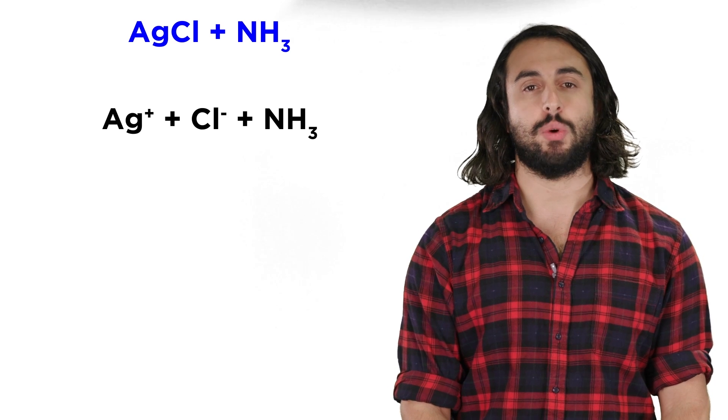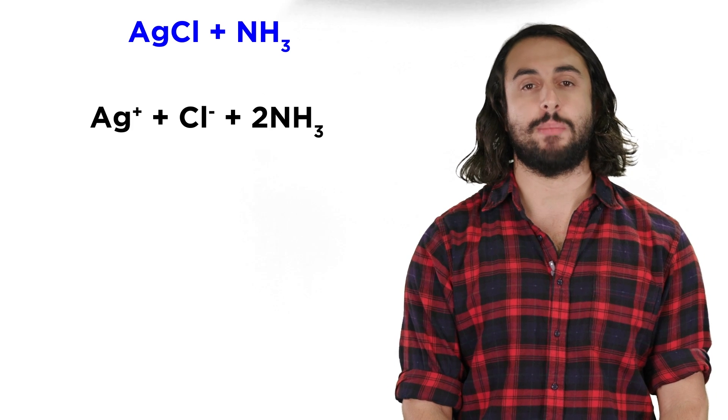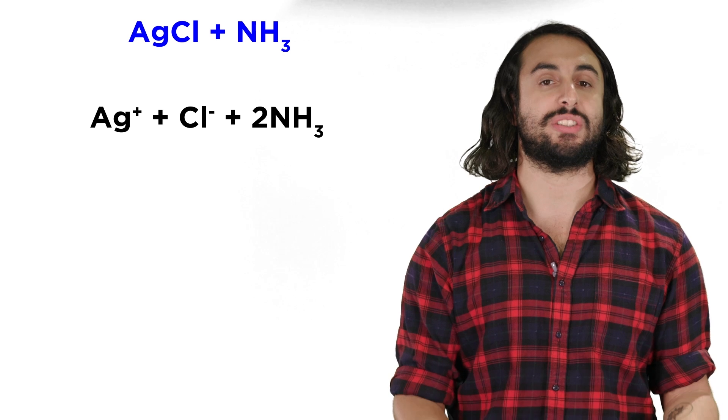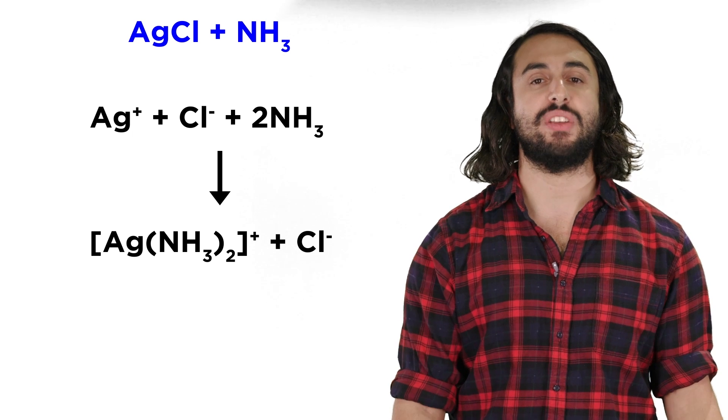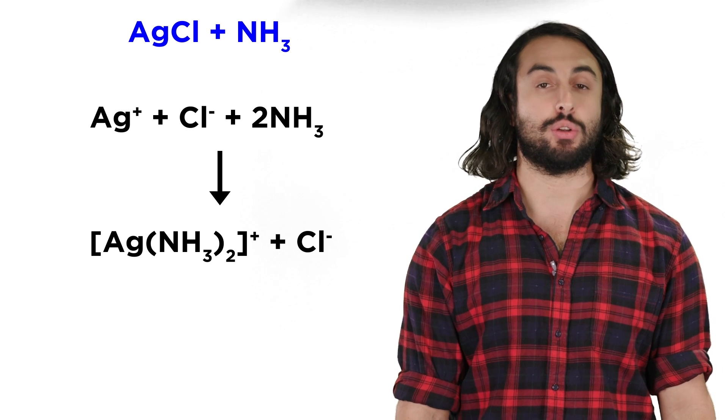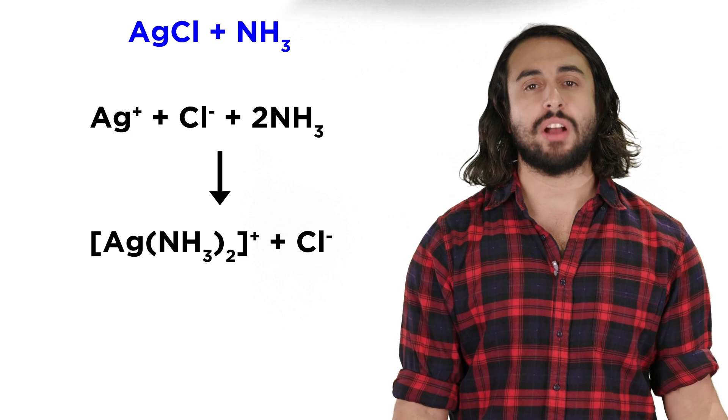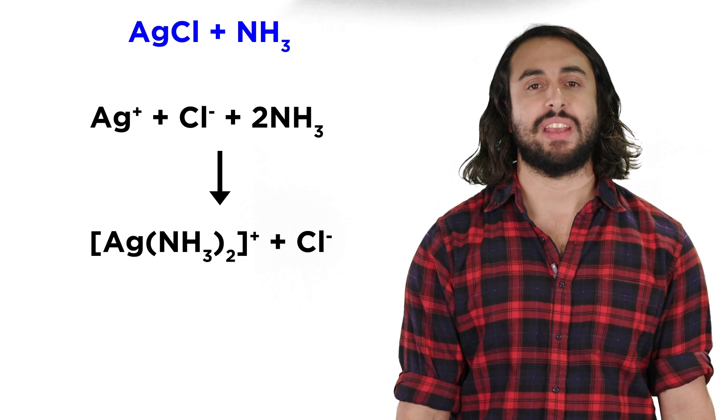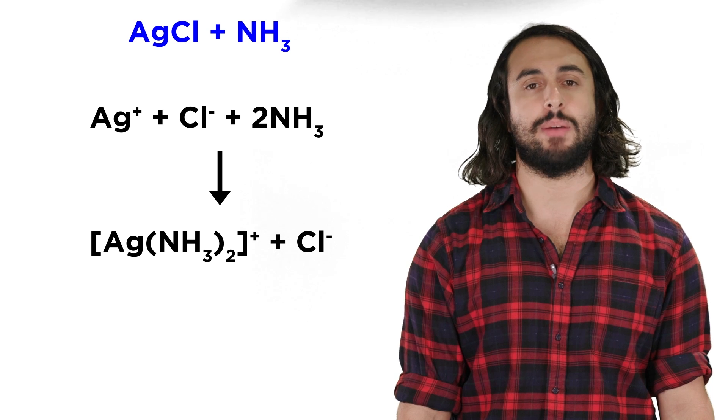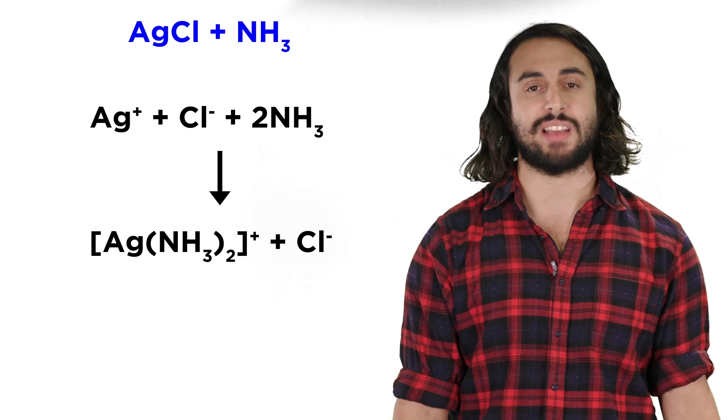In ammonia, silver chloride will dissociate and two ammonia molecules can coordinate to a silver one ion to form this complex ion and the chloride ion. Because the main chemistry that is occurring is that the silver ion and the ammonia molecules form the complex ion,